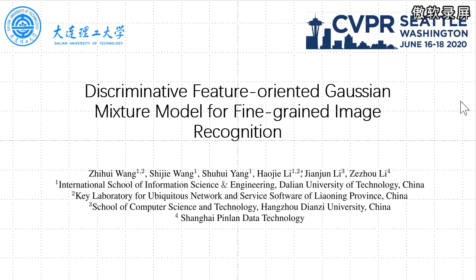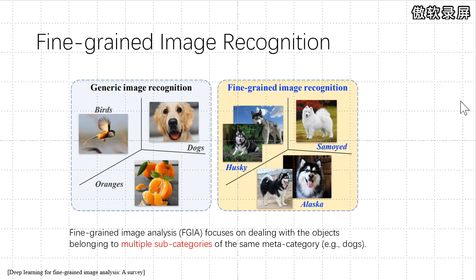Firstly, let's talk about fine-grained image recognition. Weakly supervised fine-grained image recognition focuses on distinguishing subtle visual differences under more detailed categories and granularity with only image-level annotations.